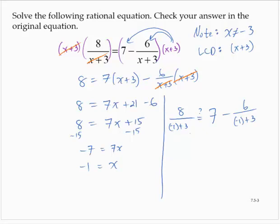So I have 8 over 2, which is 4. Right-hand side, I'd have 7 minus 6 over 2, so that's 7 minus 3, which is 4. 4 equals 4, so x equals negative 1.